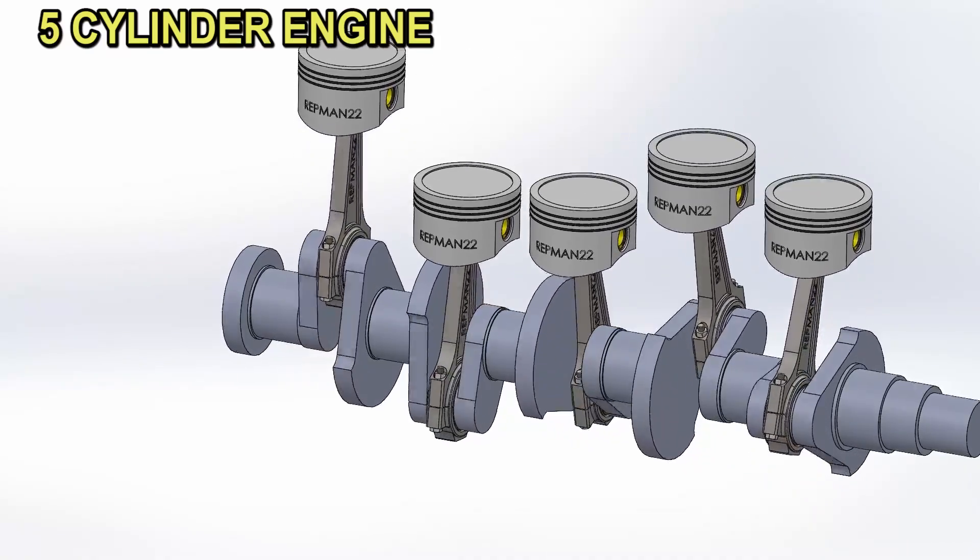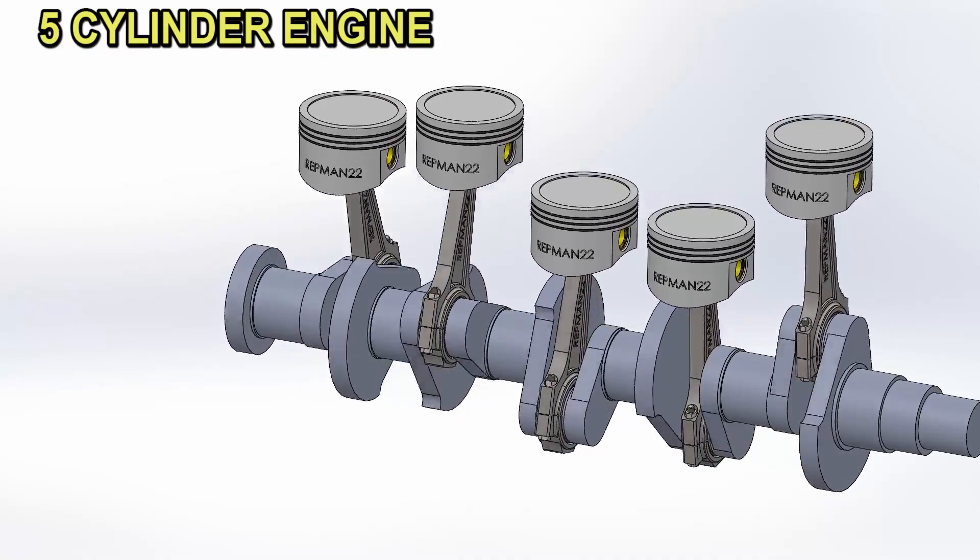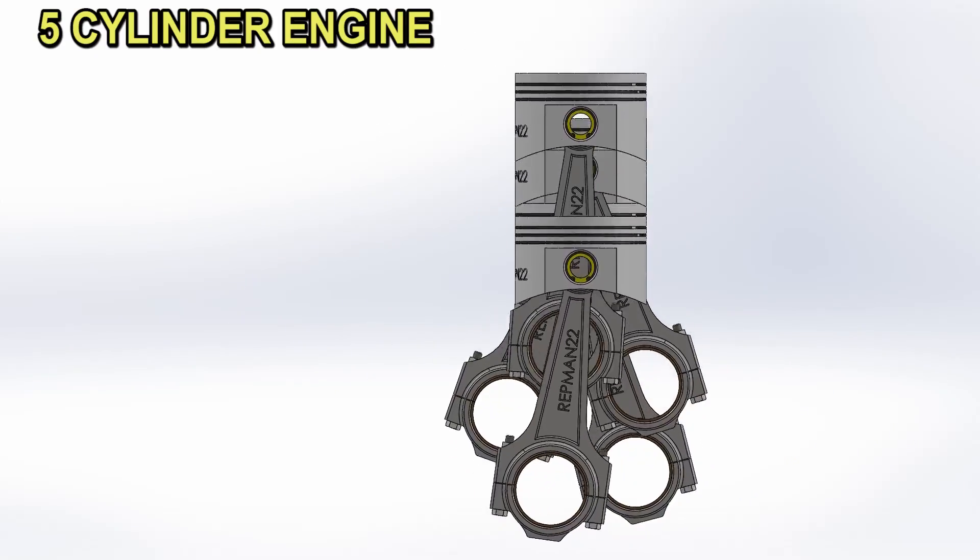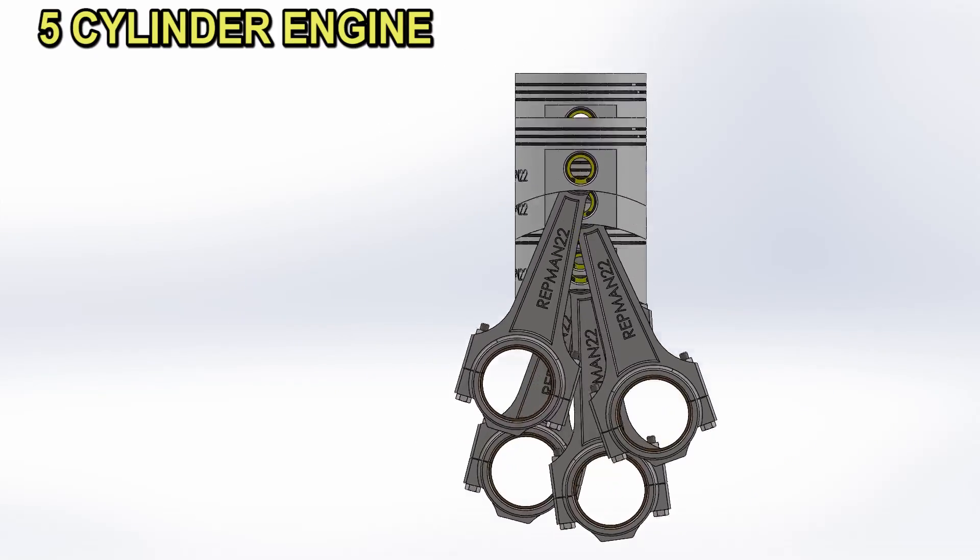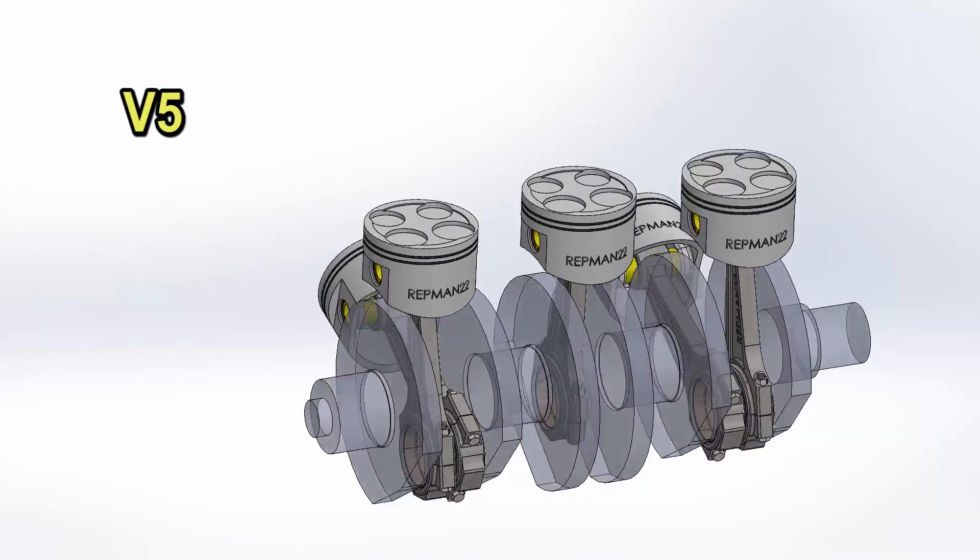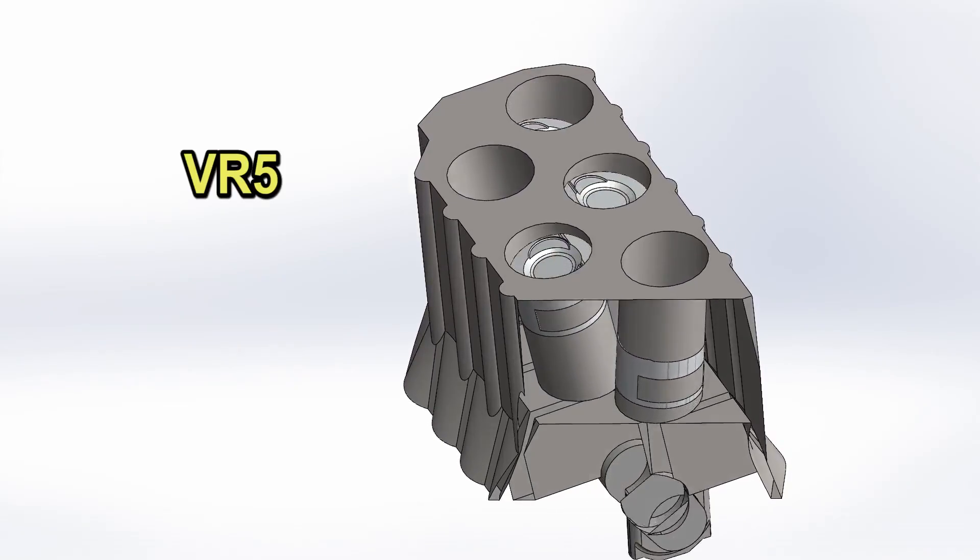The 5-cylinder engine is a rare machine. With its odd number of cylinders, it makes us think that its masses are unbalanced and it simply cannot be built. But against all odds, to put cylinders in line is not the only way to do it. We also have the V5 and the VR5 engine.